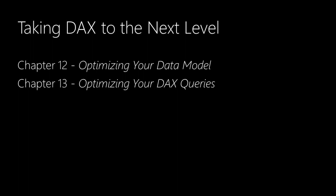Chapter 12 wraps things up by delving into the VertiPack engine and how it can be used to help you optimize your data model, along with how and why this may improve performance. And finally, Chapter 13 gives some techniques that will help to make your DAX calculations more efficient, including a look at some of the tools to help you analyze query performance. It also takes a look at the two DAX calculation engines — the storage engine and the formula engine.